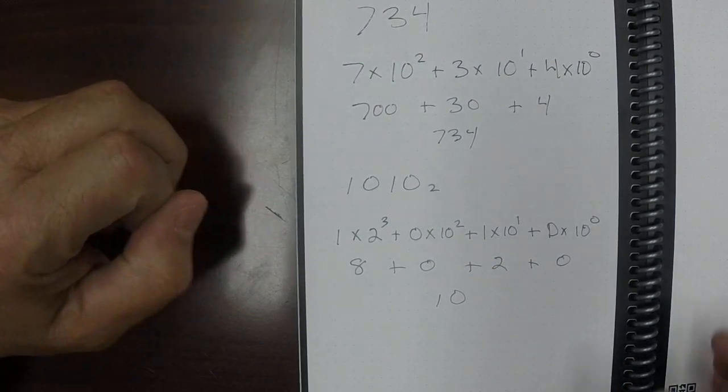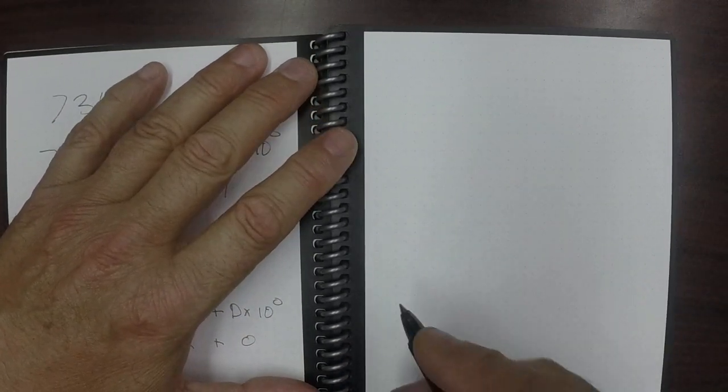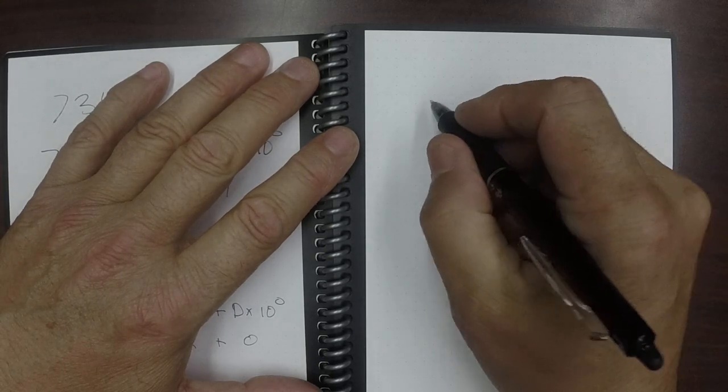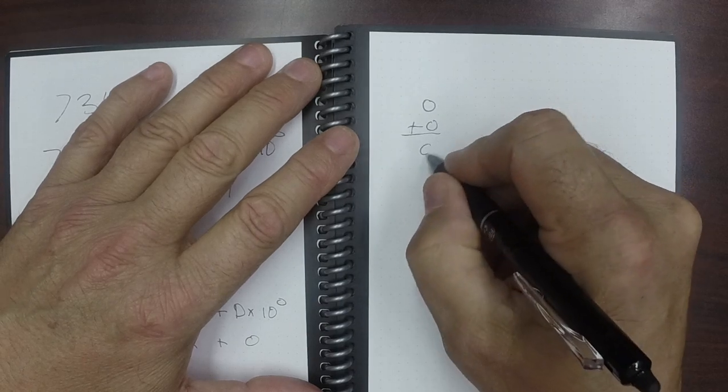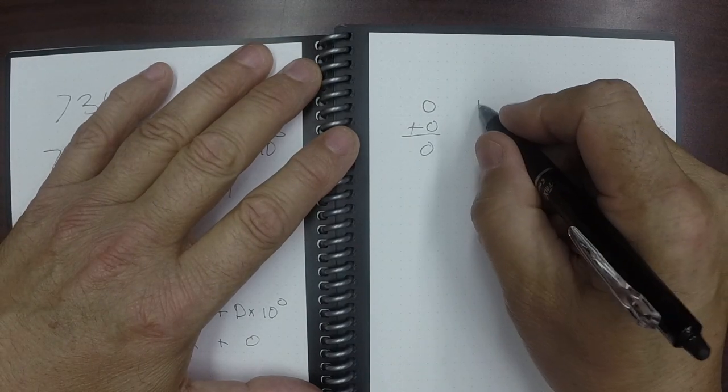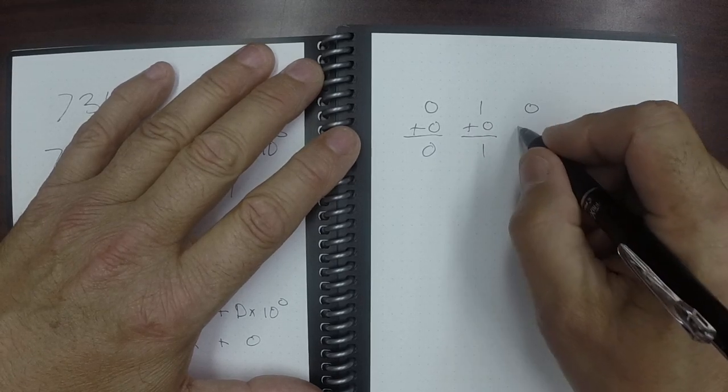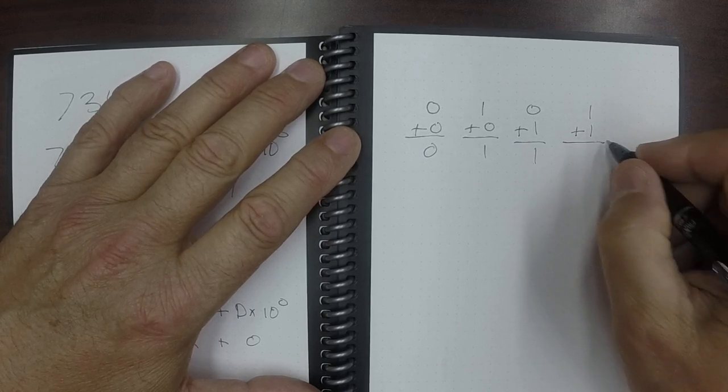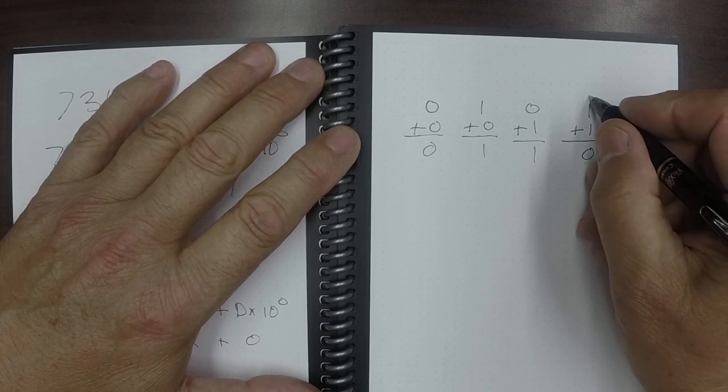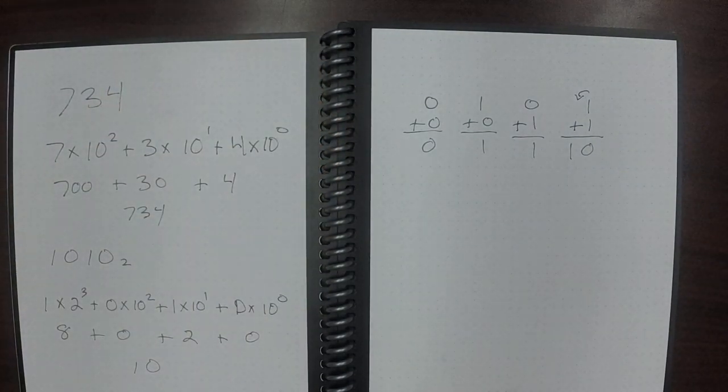Well, now that we understand binary fairly well, let's look at addition. What we're going to do for addition is start off with just two bits to understand how things are added together. 0 plus 0 is, as you would suspect, 0. 1 plus 0 is 1. 0 plus 1 is 1. 1 plus 1 in binary is 0 and then carry the 1, which is 10. So that's how you do binary addition.